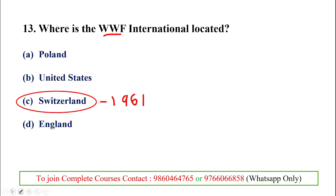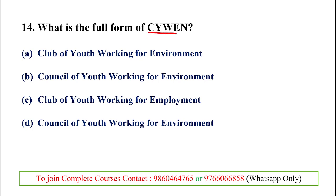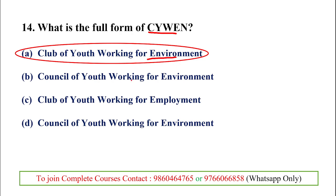The next question asks for the full form of CYWEN (C-Y-W-E-N). The full form is Club of Youth Working for Environment. Most participants in CYWEN are young women, so it is sometimes referred to as Club of Youth Women working for Environment, but the correct full form is Club of Youth Working for Environment.